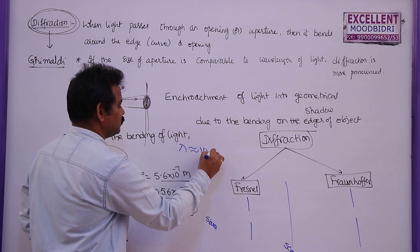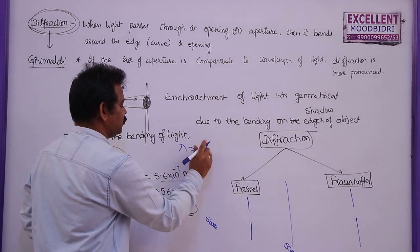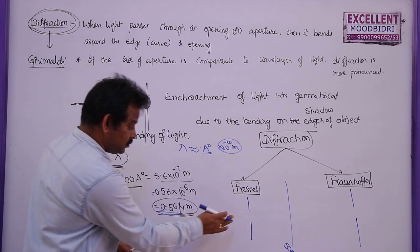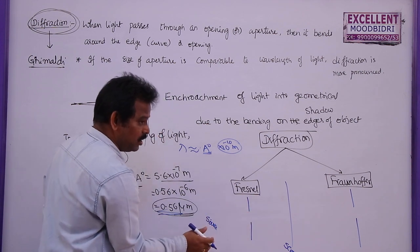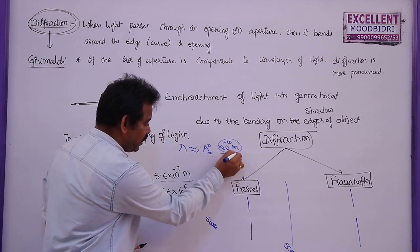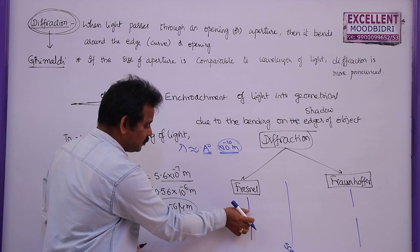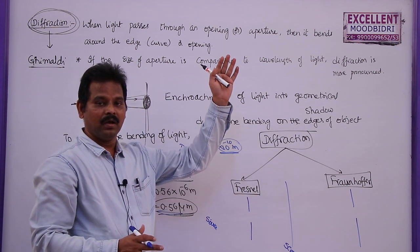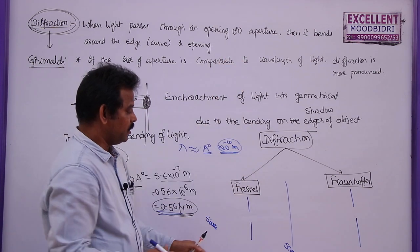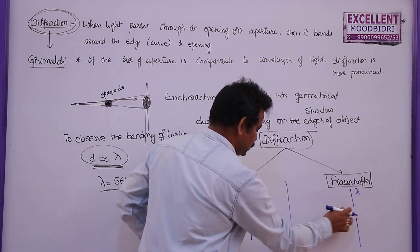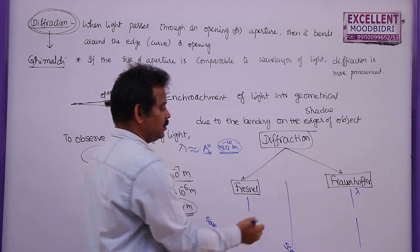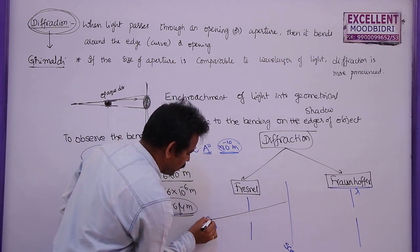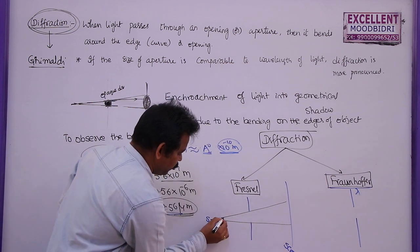The slit width is very large when compared to the wavelength of light, and the distance from source to slit is also very large. So don't think infinite means 100 or 2000 kilometers — when compared to the wavelength, if the distance of source and slit is very large, we call it Fraunhofer diffraction. In Fraunhofer diffraction, the light passes through the slit and we consider the wavefront.